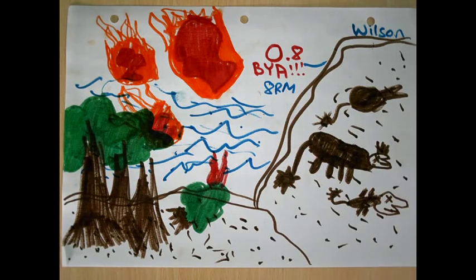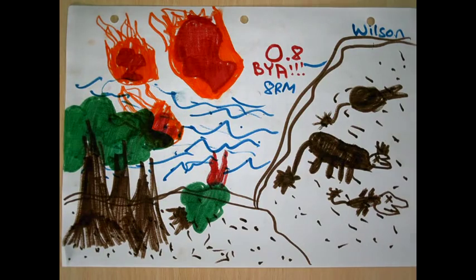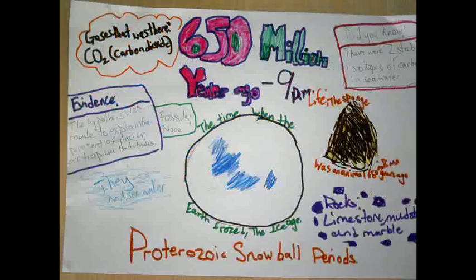0.8 billion years ago was around the time of the great extinction of the dinosaurs. There are many theories about how the dinosaurs went extinct. One of the best and most known theories is that a giant meteorite hit Earth and killed them all.